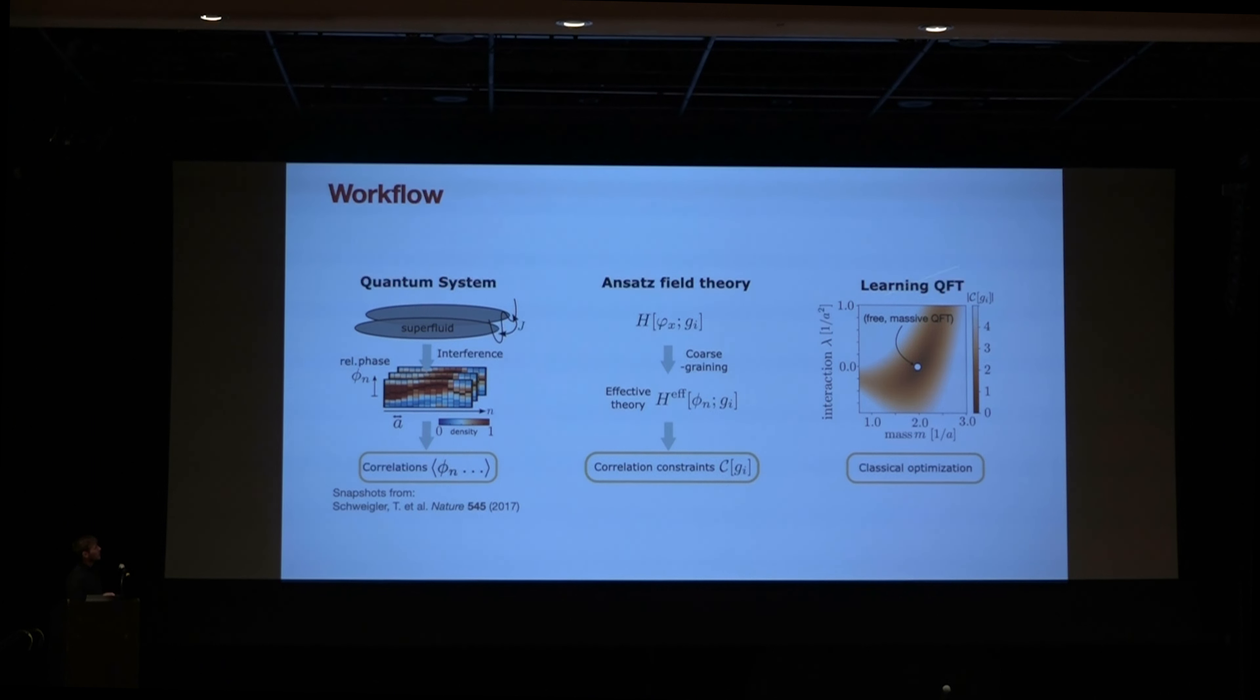So here you see an example, an analytical example of how this constraint landscape might look like here for the input data of the sine-Gordon theory. And you see that this minimum here nicely coincides with this white dot, which is the Hamiltonian that we used to calculate the input data.